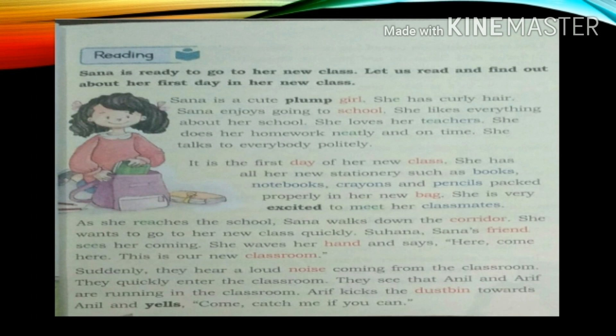Let us now start reading the text. It is about a girl, Sana. Sana is ready to go to her new class. Sana is a cute, chubby girl with curly hair. She enjoys going to school and loves everything about it. She loves her teachers, does her homework neatly and on time — which shows she is a punctual girl. She talks to everybody very politely, which means she is a kind girl.